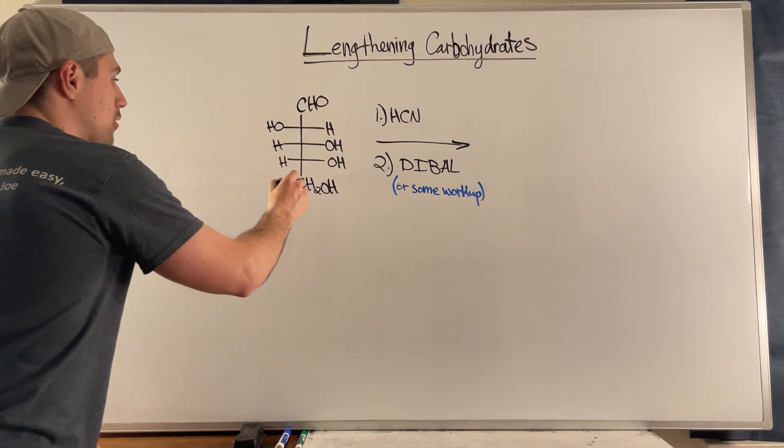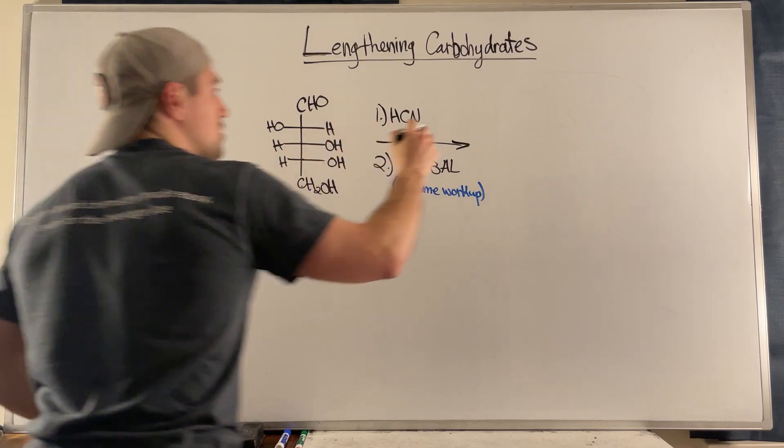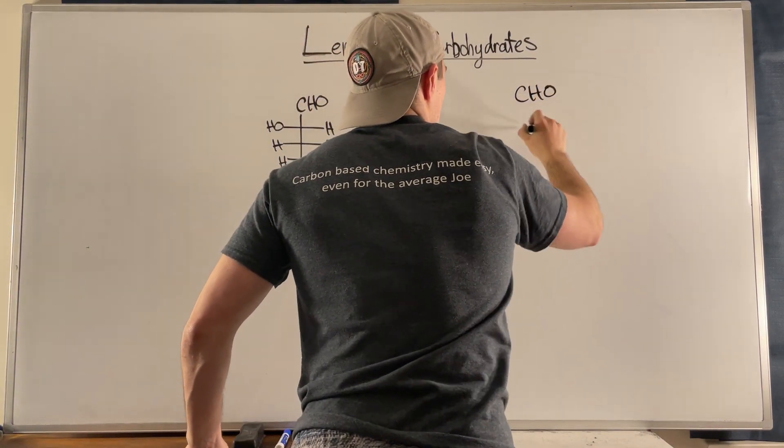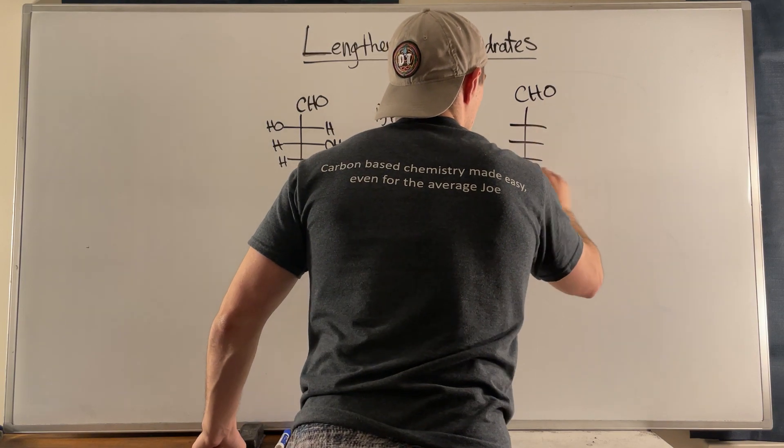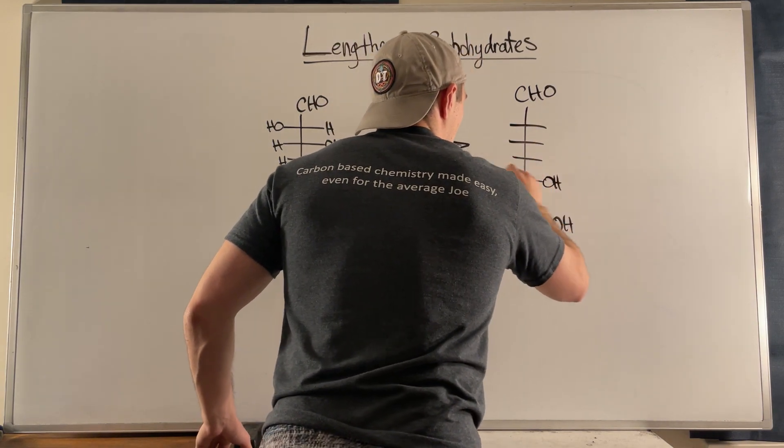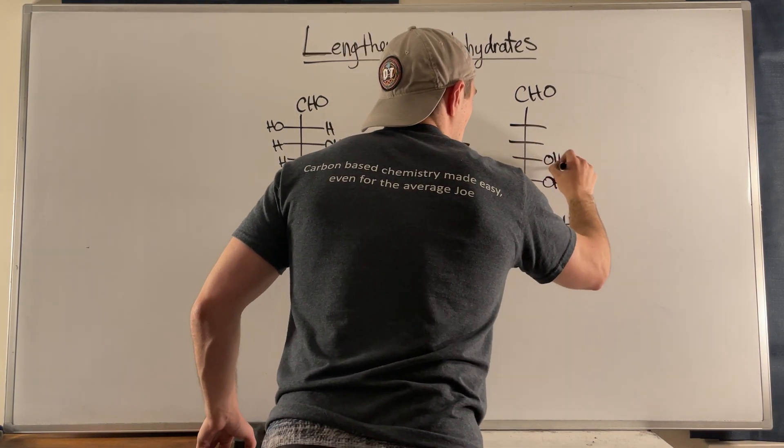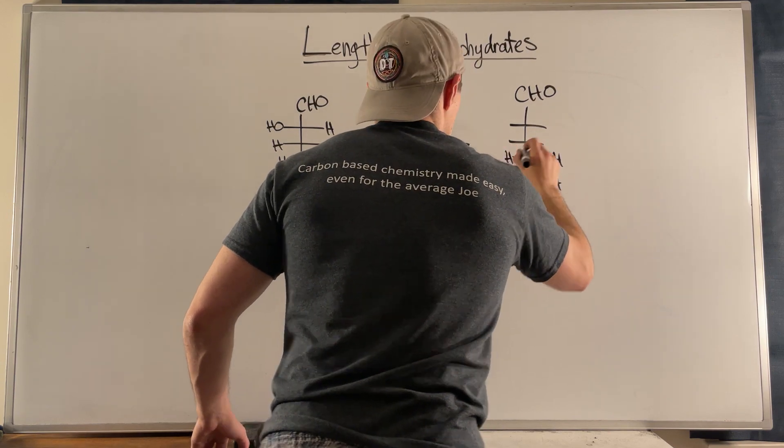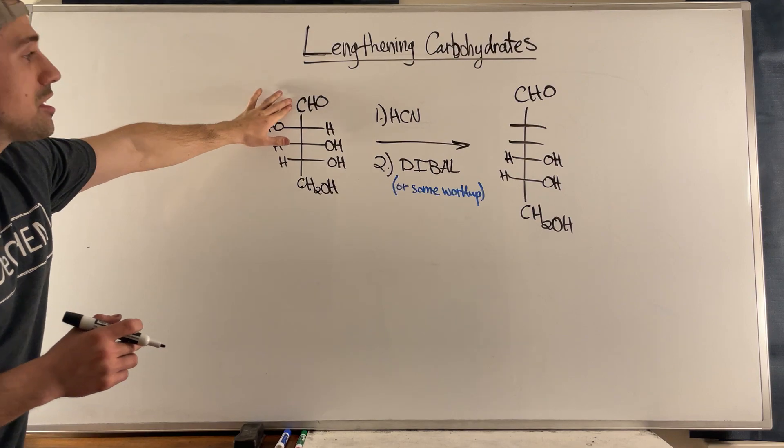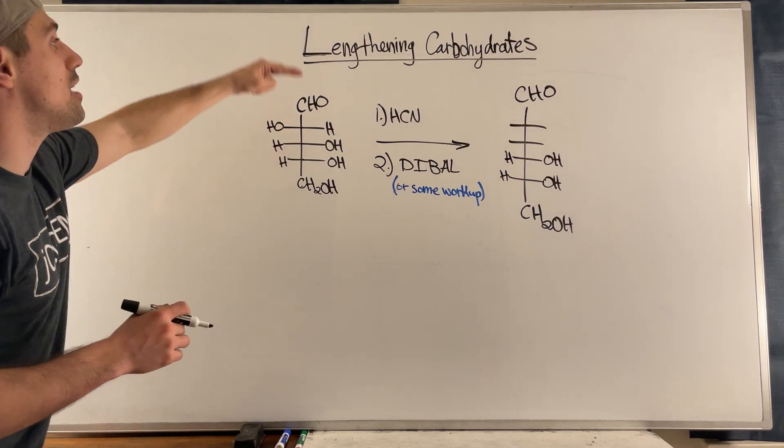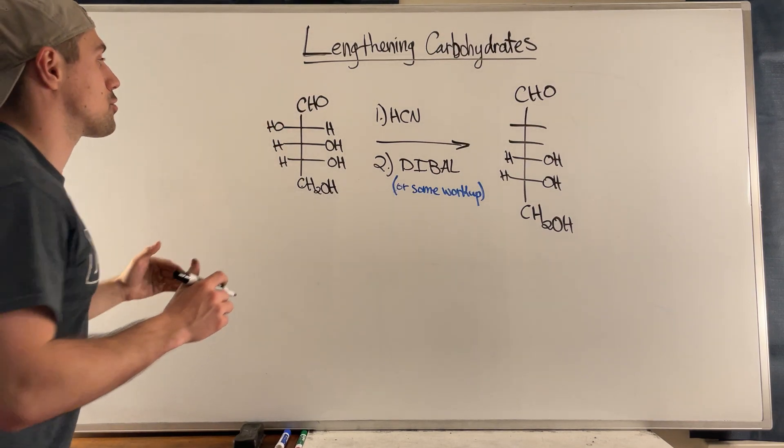So if you have this, what do you get? Well you'll go from having one, two, three, four, five carbons to something like this. The bottom of the chain stays, because what's happening really is that you're going to attack this carbonyl. You're going to interact with this carbonyl and it's from there that you're going to add an extra layer.